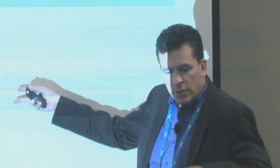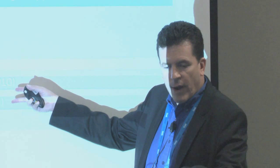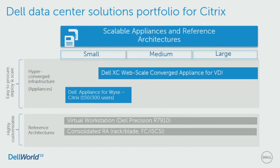From a Citrix standpoint, we can provide reference architectures where you drop stuff into a rack and follow the blueprint we write. By long I mean like 350 pages — you read this before you go to bed. But these docs actually tell you how to build this stuff out, scale it, and really tune it for your organization.